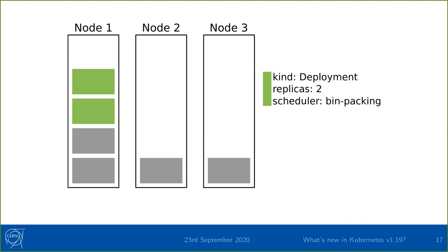There's a clear use case for bin packing when debugging experiment workloads that have one-core and eight-core jobs on eight-core nodes — bin packing ensures you always have nodes available for the eight-core jobs by stacking all one-core pods together on a single node. Thank you very much for the presentation, Thomas. Kubernetes 1.19 will be available in the next couple of days so everyone can play with this very soon. Thank you everyone for attending.